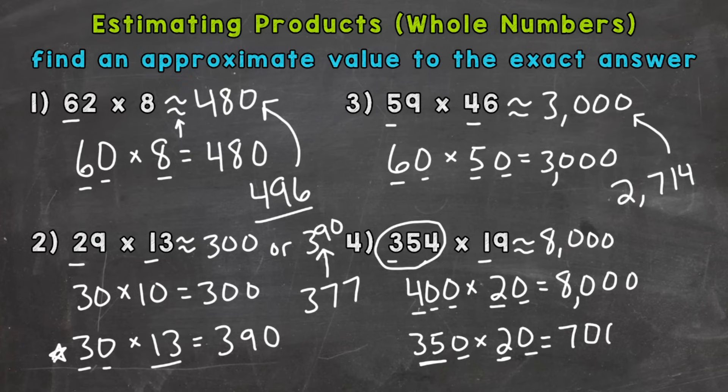One, two zeros, and I get an estimate of 7,000. So both good estimates there, but 7,000 is going to be a better one because I rounded closer to the original problem. The exact answer is 6,726. So you can see that our second estimate is actually much better than the front end estimate.